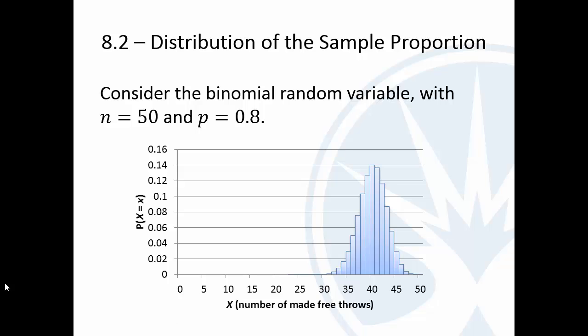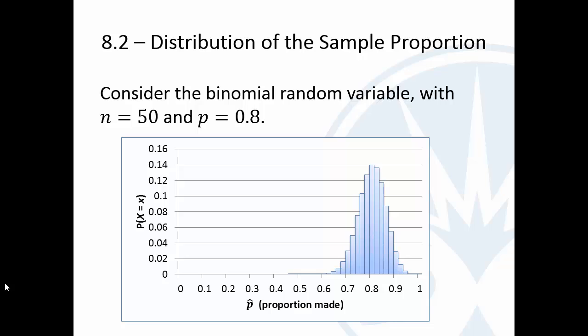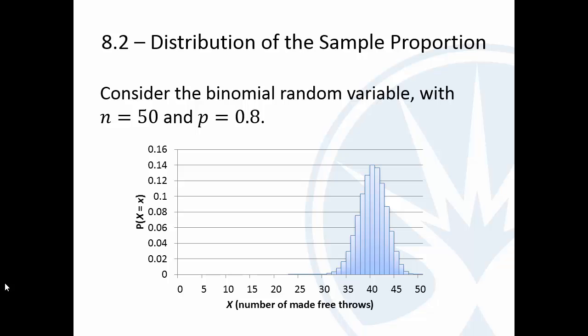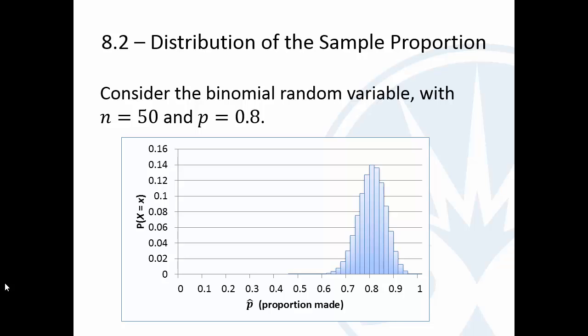So what we're going to do now is a subtle transition. Instead of looking at this binomial random variable and counting the number of made free throws, let's consider what proportion of the baskets we would expect her to make. So let's divide all these by 50, and we get a graph that looks identical, except the horizontal axis is the proportion of free throws made. And so what we have now is a distribution of this sample proportion.